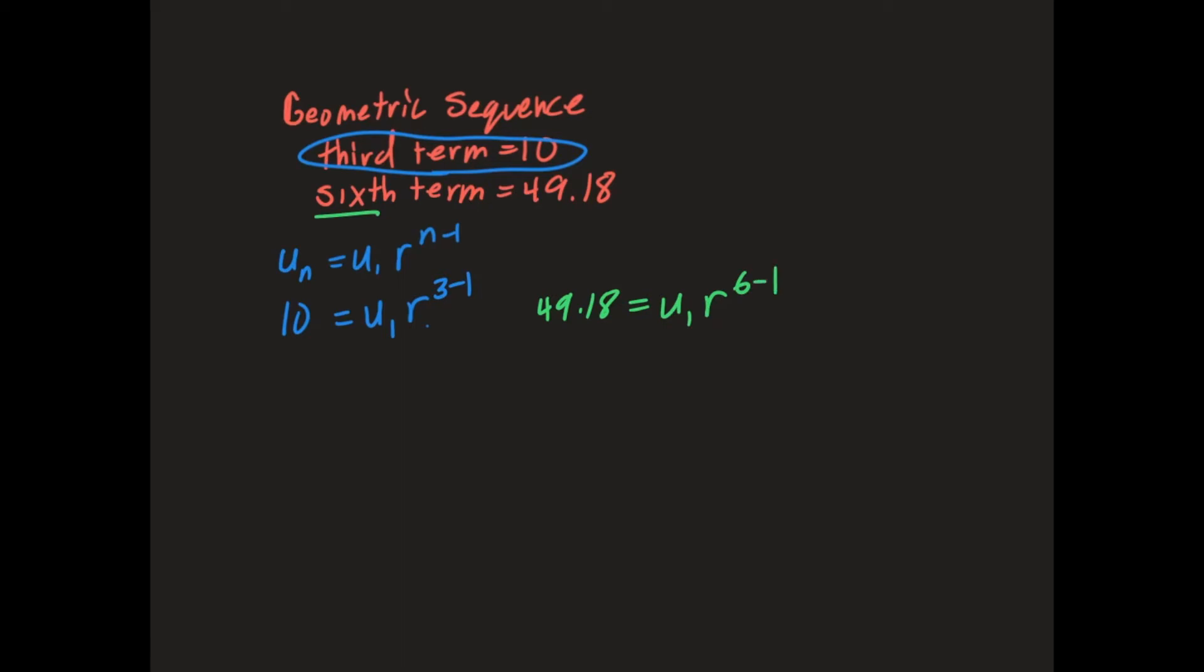Now when I simplify these, I want you to see that what I get is 49.18 equals u1 R to the fifth. And then this one over here, I get 10 equals u1 R squared.